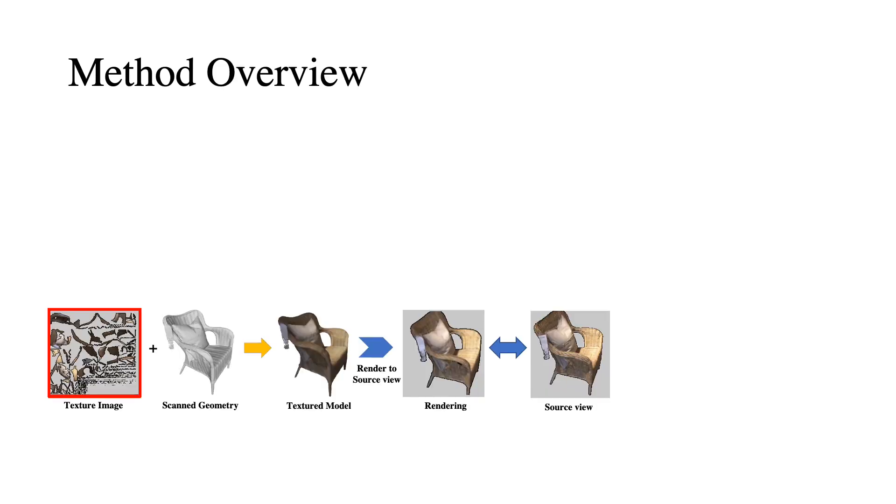Similar to the standard pipeline, we render the target texture to the source viewpoint to make it as close as possible to the source image. As formulated in our adversarial metric, we train a conditional discriminator that effectively recognizes the rendering as a fake example conditioned on the source image. We then optimize the texture by maximizing the adversarial loss, which makes it as real as possible under the learned metric.